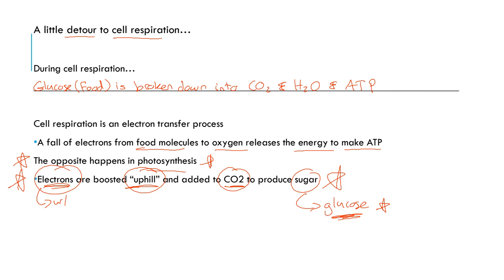And if I go back here really quick, during cell respiration we're seeing the opposite. Glucose, like I said, is going to be the product of photosynthesis, and it's going to be broken down into carbon dioxide, water, and ATP.